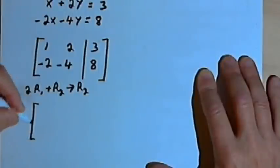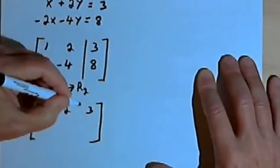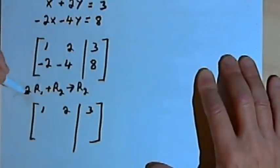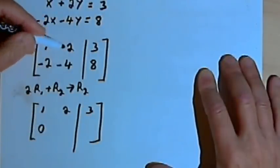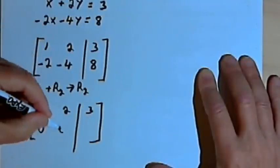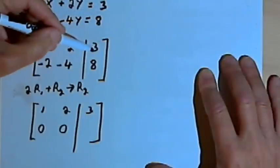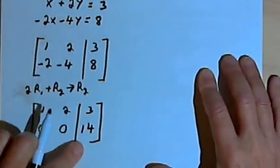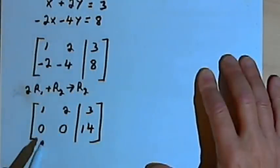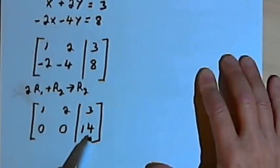The first row stays the same: 1, 2, 3. The second row becomes: 2 times 1 plus negative 2 is 0; 2 times 2 plus negative 4 is 0; and 2 times 3 plus 8 is 14. So now I've got a bottom row with zeros on the left side of the matrix but 14 on the right side.